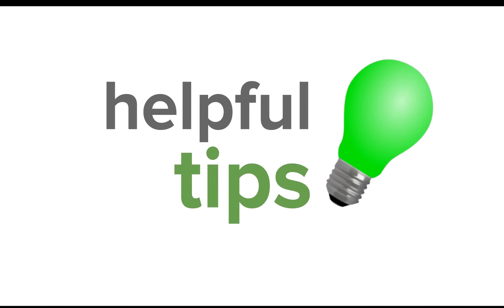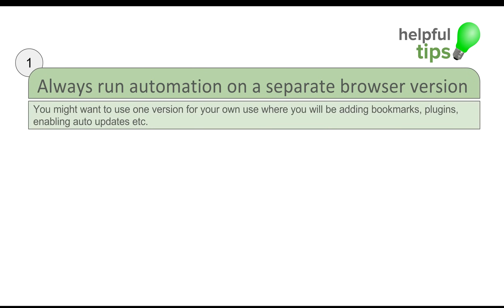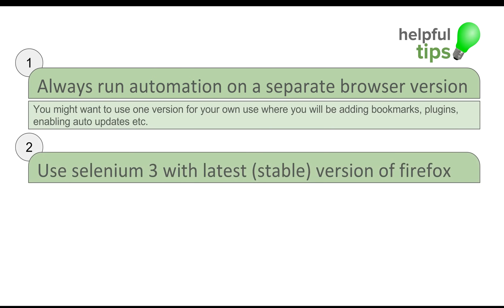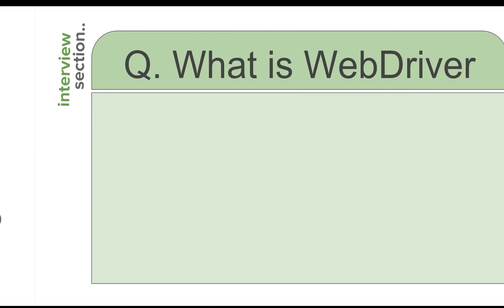In the helpful tips section: the first tip is always run automation on a separate browser version. You want to keep a primary browser for your own use — for bookmarks, plugins, history, and updates. It is always recommended that automation runs on a separate browser version. The second tip is to use Selenium 3 with the latest stable version of Firefox, and the same applies to any other browser. The third tip is you must use Java 8 or higher for Selenium 3. If your system has a Java version lower than 8, Selenium 3 may not work.